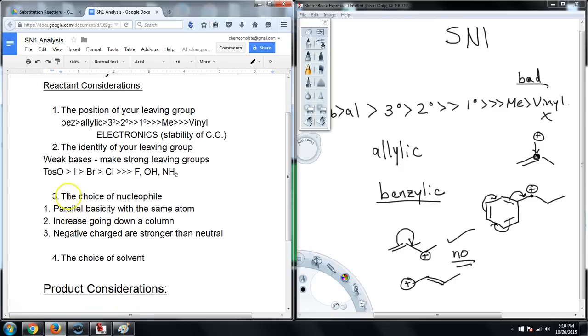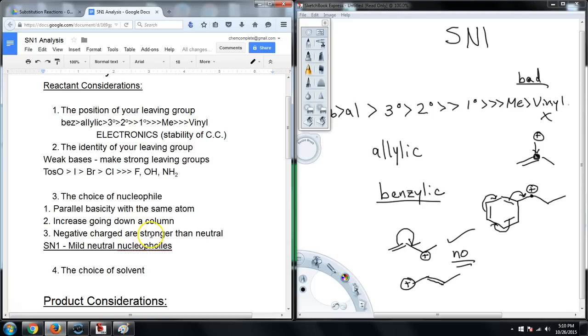So the next one, the choice of nucleophile, we talked about how the same atoms were going to parallel basicity to nucleophilicity. We increase going down a column and negative charged are stronger than the neutral ones. It turns out that when we are dealing with an SN1 reaction, we are interested in mild neutral nucleophiles. So we're trying to stay away from some of those nucleophiles. We were trying to stay away from the really heavy hitters, the negative charged ones. Remember those were good in SN2 because we wanted the nucleophile to get in and attack the carbon at the same time the leaving group was leaving. We needed a lot of energy built up in that nucleophile here.